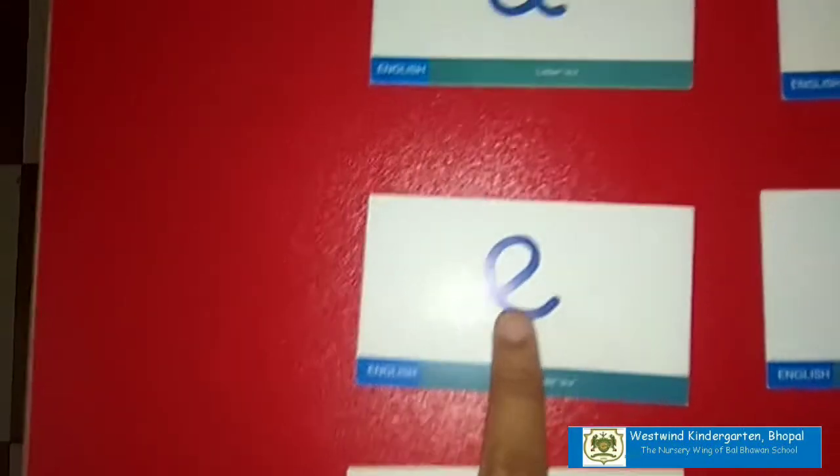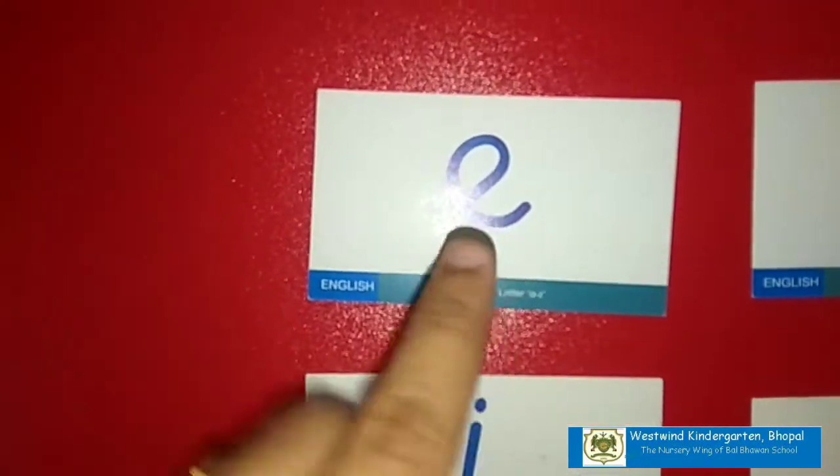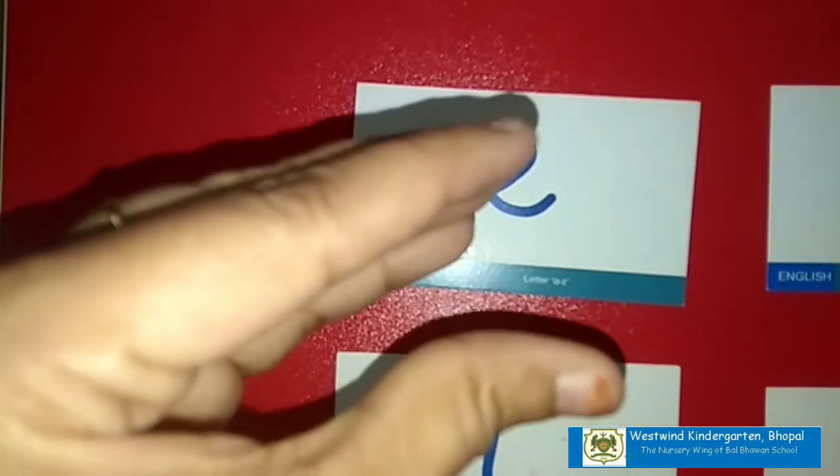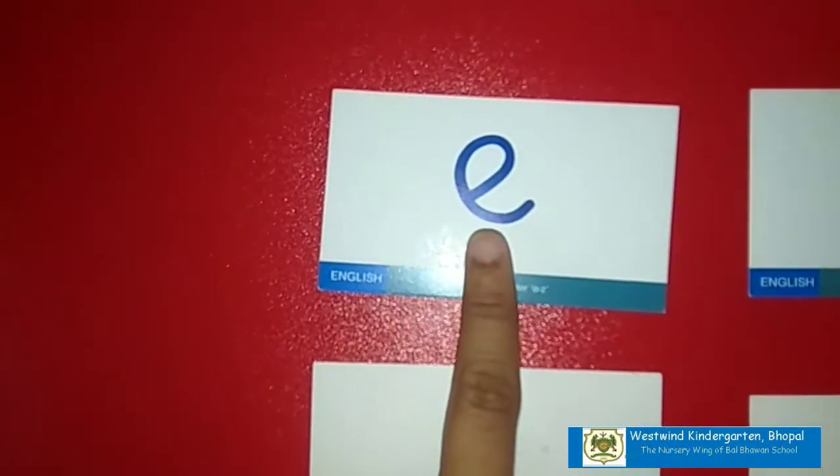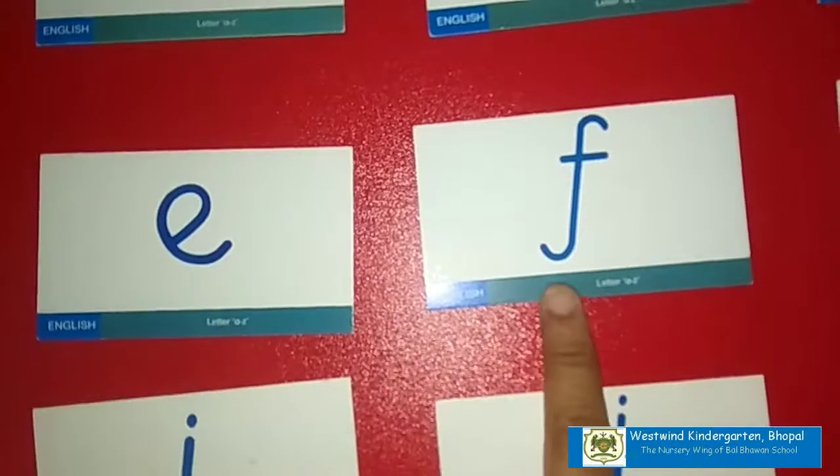Then we have letter E as in A. Your mouth will be smaller and say A.